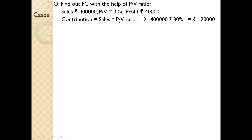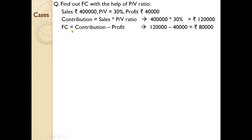We know that contribution equals sales into PV ratio. So, contribution is sales 4 lakhs into PV ratio 30%, giving contribution 1 lakh 20 thousand. Profit is already given in the question, and we know the equation where fixed costing, profit, and contribution are related. Fixed costing equals contribution minus profit. We have found contribution, so contribution minus profit gives the amount of fixed costing. This is how you use the various equations in various questions.